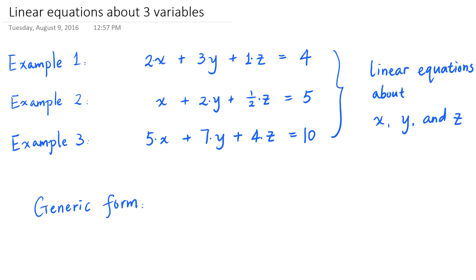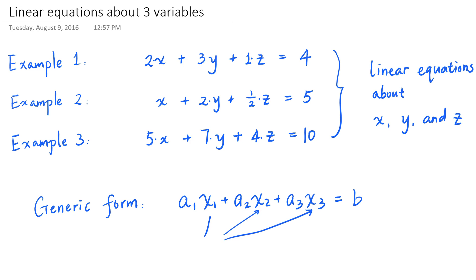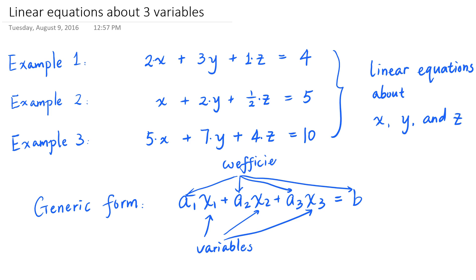So the generic form of a linear equation about three variables x sub 1, x sub 2, x sub 3 looks like a number a sub 1 times the first variable x sub 1, plus the number a sub 2 times the second variable x sub 2, plus a third number a sub 3 times the third variable x sub 3, equaling a fourth number b. The subscripted letters x sub 1, x sub 2, x sub 3 are variables. And the letters a sub 1, a sub 2, a sub 3, and b are called coefficients of the equation — these are constants, not variables.